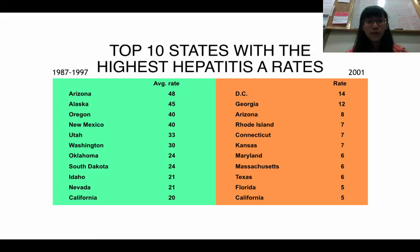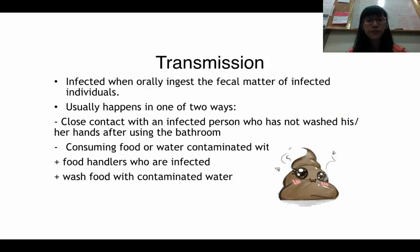Here's a chart showing the top 10 states with the highest Hepatitis A rates. In 1987 and 1997, the top three were Arizona, Alaska, and Oregon. These changed to DC, Georgia, and Arizona in 2001. What's particularly interesting is that DC ranked first in 2001 for Hepatitis A cases.